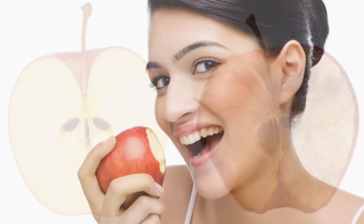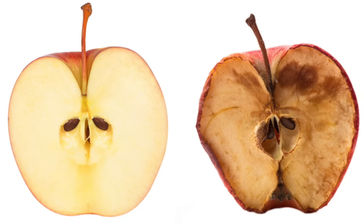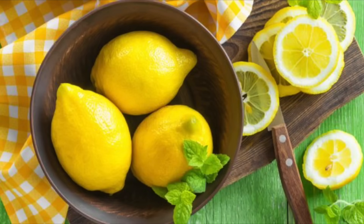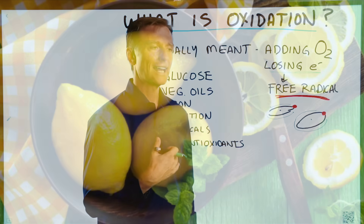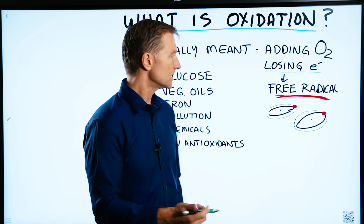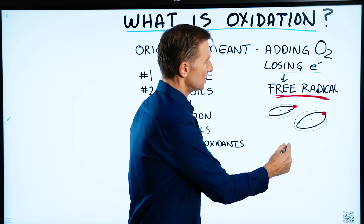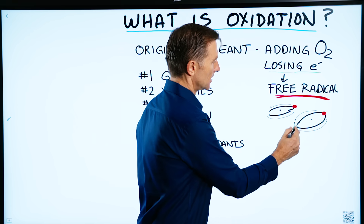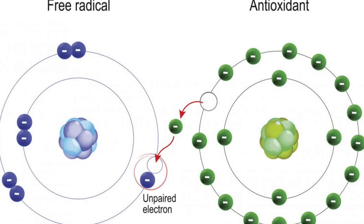Another example would be biting into an apple. If you leave it exposed to oxygen, it's going to turn brown. But if you add an antioxidant like lemon, it doesn't turn brown. What an antioxidant does is it donates an electron to make things more symmetrical and stabilize the atom.